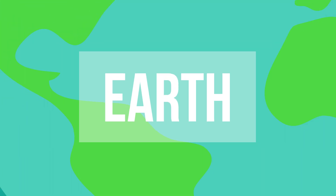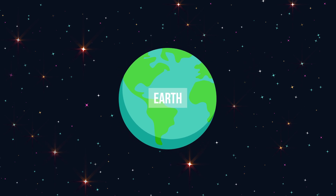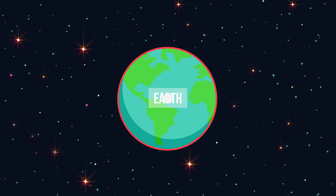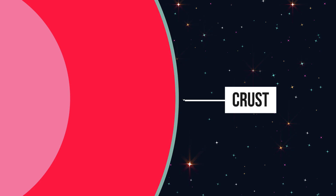You live on Earth, a huge mass traveling through space that orbits the Sun. But what is the layer of Earth you are on right now called, and do you know what all the layers that form our planet are called? Earth has distinctive layers within it. Let's start with the outermost and thinnest layer: the crust.